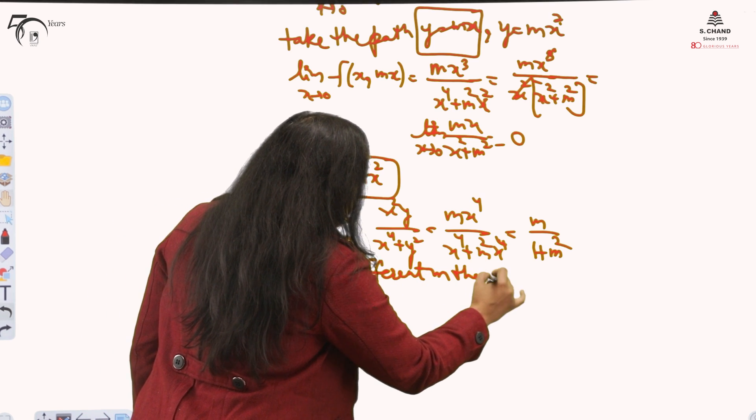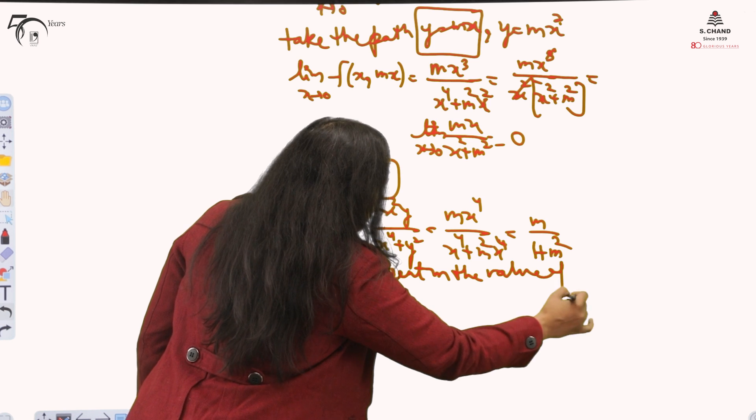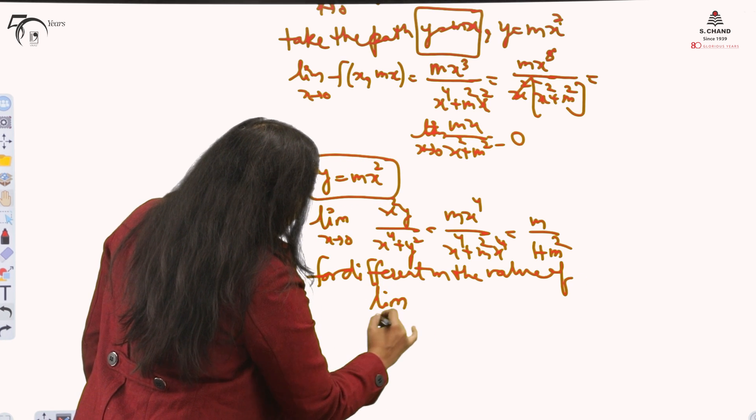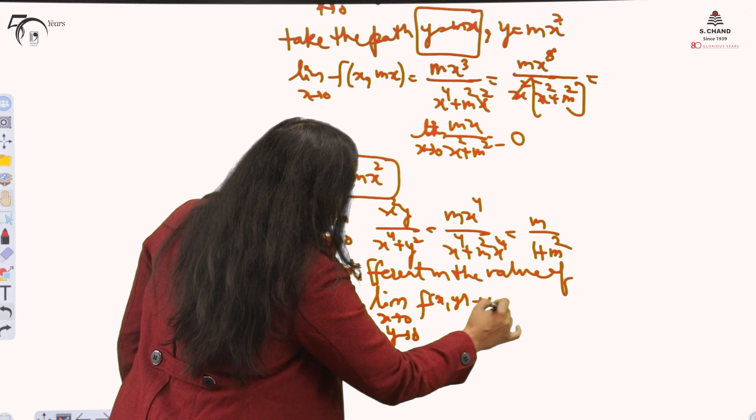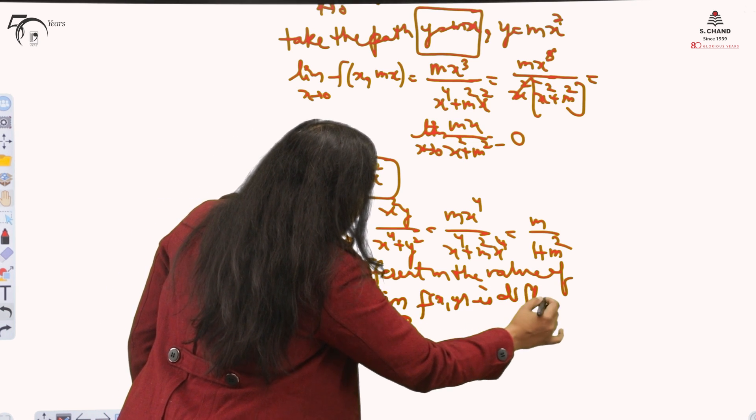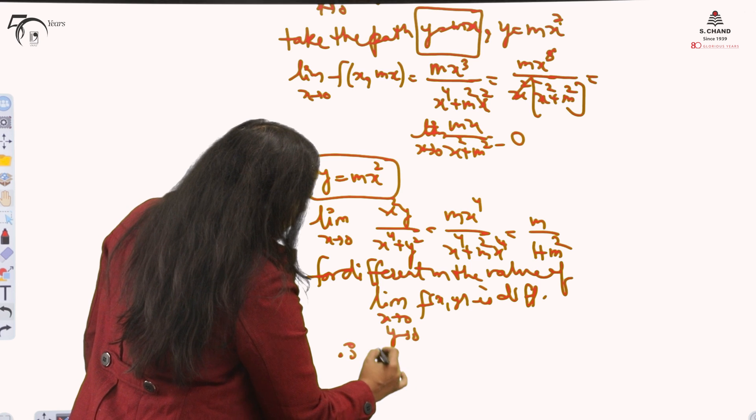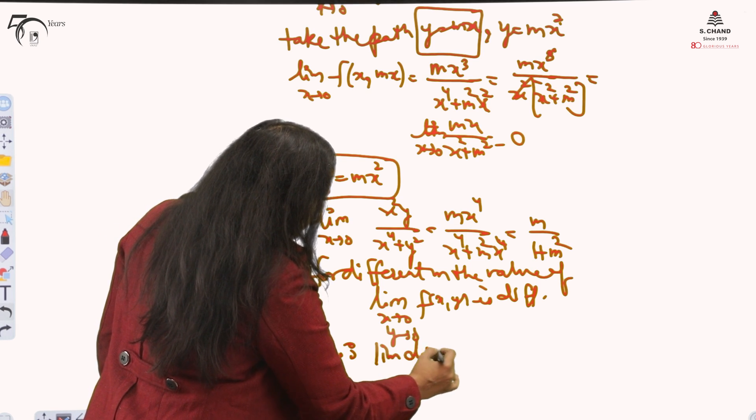It should be 0 if the limit exists. If it is not 0, because for different m, for different m, the value of limit x=0, y=0, if x,y is different. Therefore, the limit does not exist.